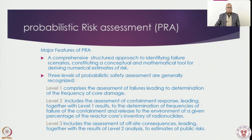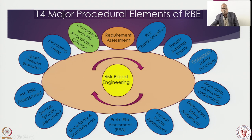There are 15 major procedural elements of the risk-based engineering framework — this is an important slide. The first step is requirement specification, covering the problem statement, objective, and scope. The second step is risk characterization: how risk is defined and how insights from risk studies can be utilized to solve real-time problems.